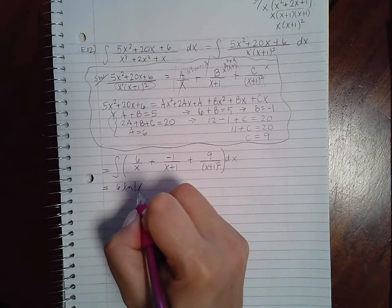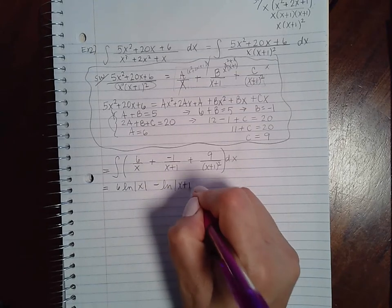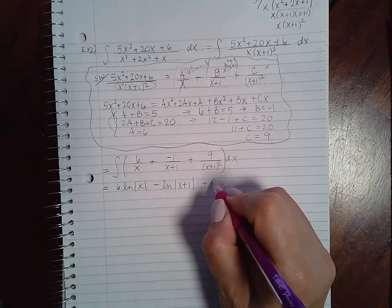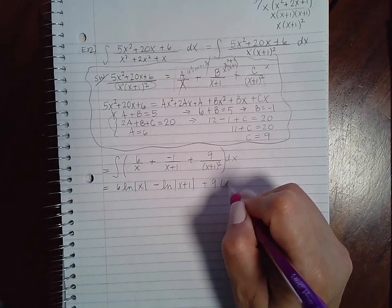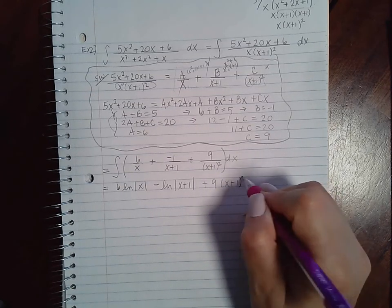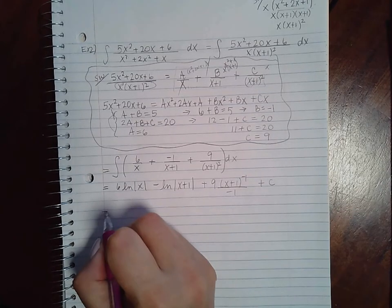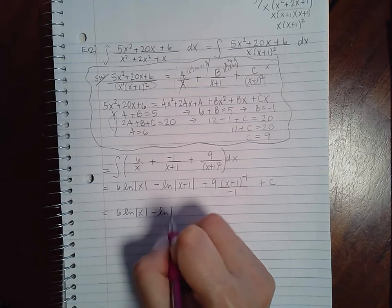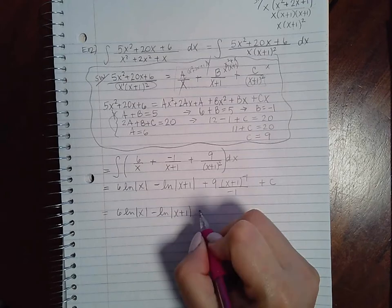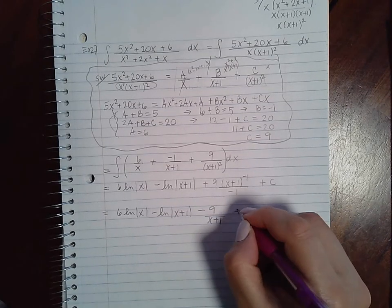So this is going to be 6 ln of x minus the ln of x plus 1, and this is going to be 9 times x plus 1 to the negative 1 over negative 1 plus C. Now this can be simplified, so 6 ln of x minus ln of x plus 1 minus 9 over x plus 1 plus C. But for the most part, that is the final answer.